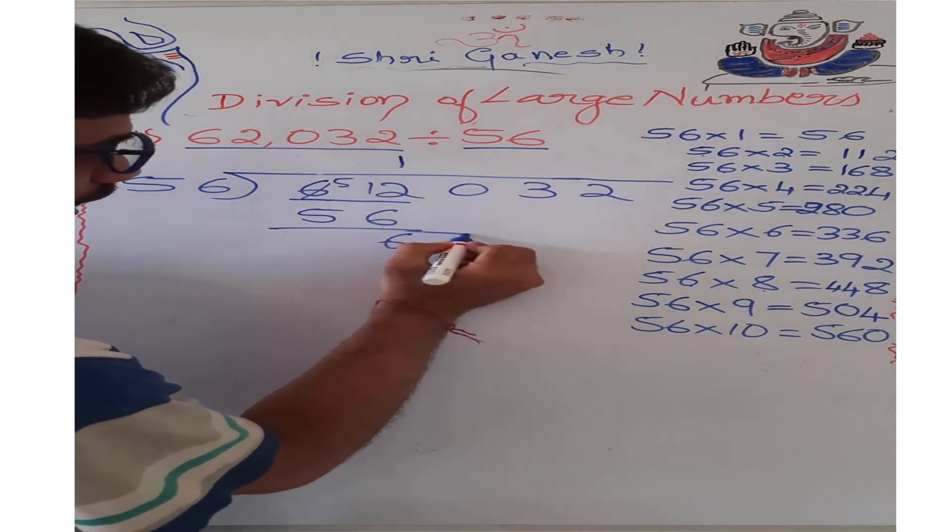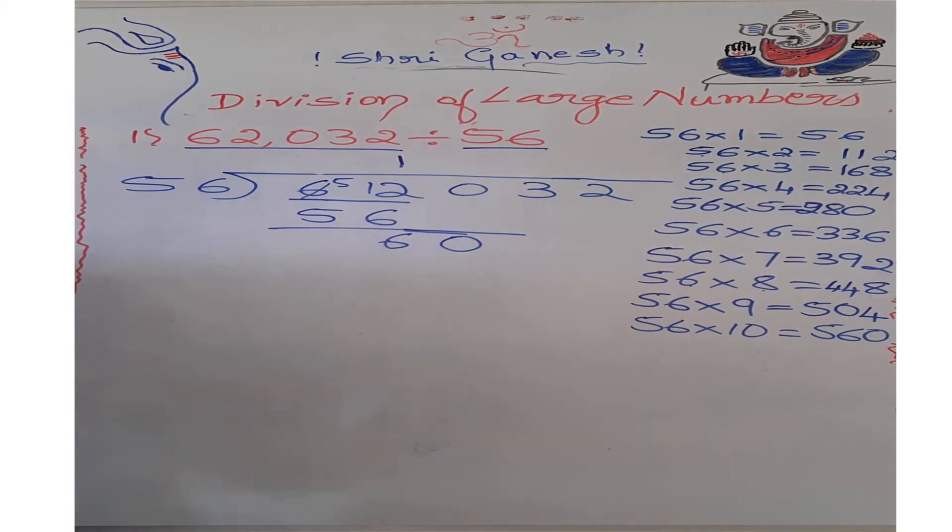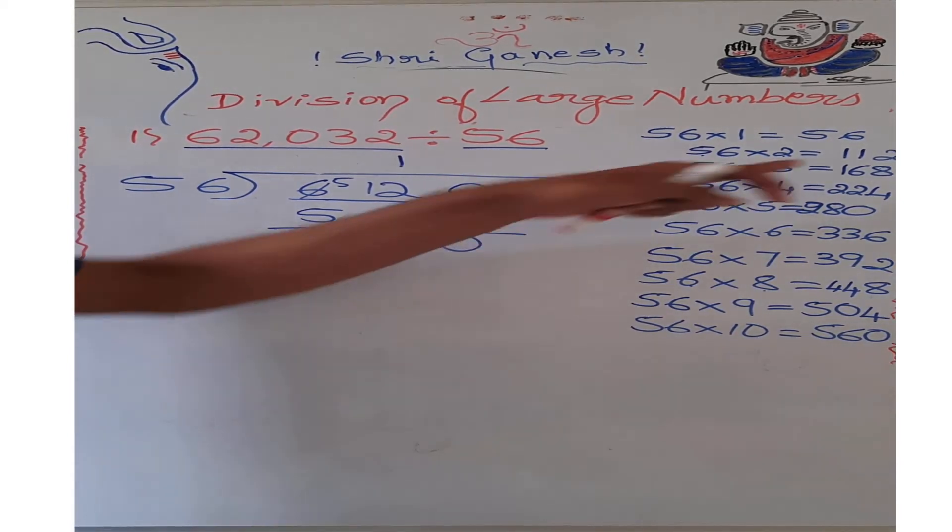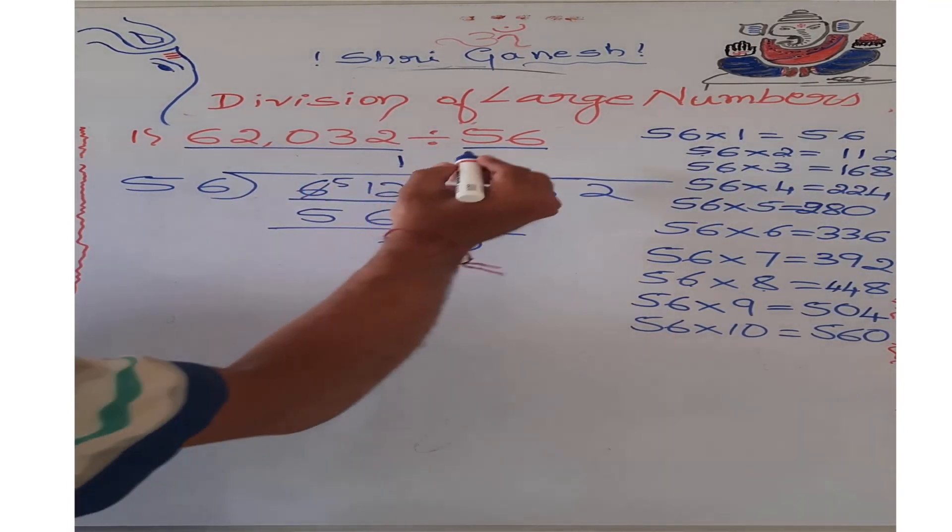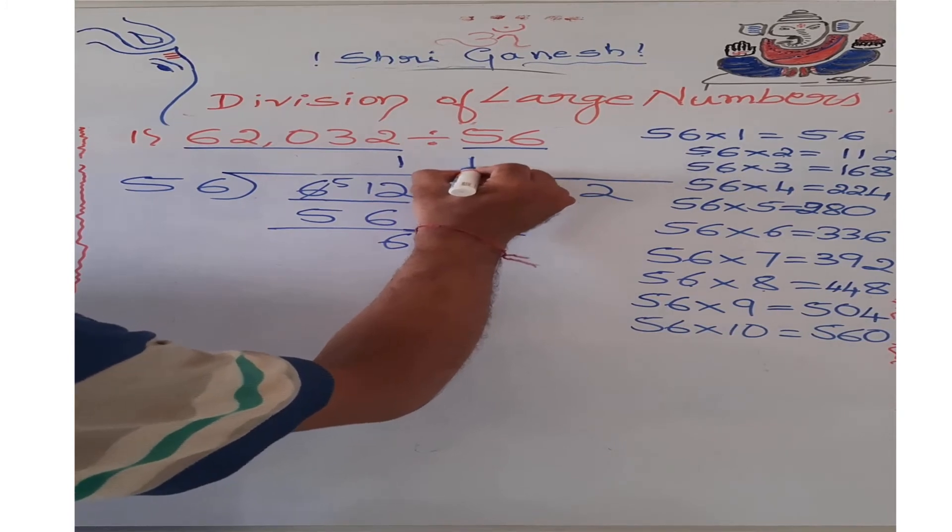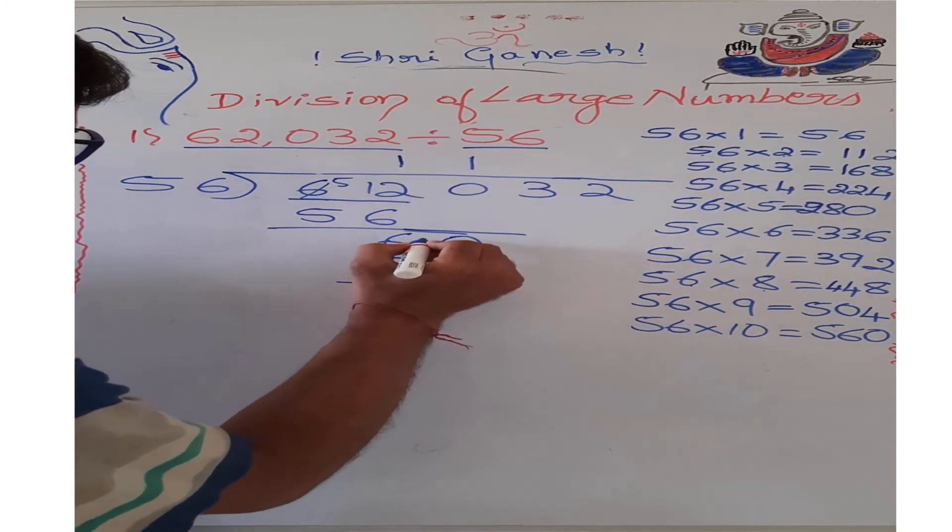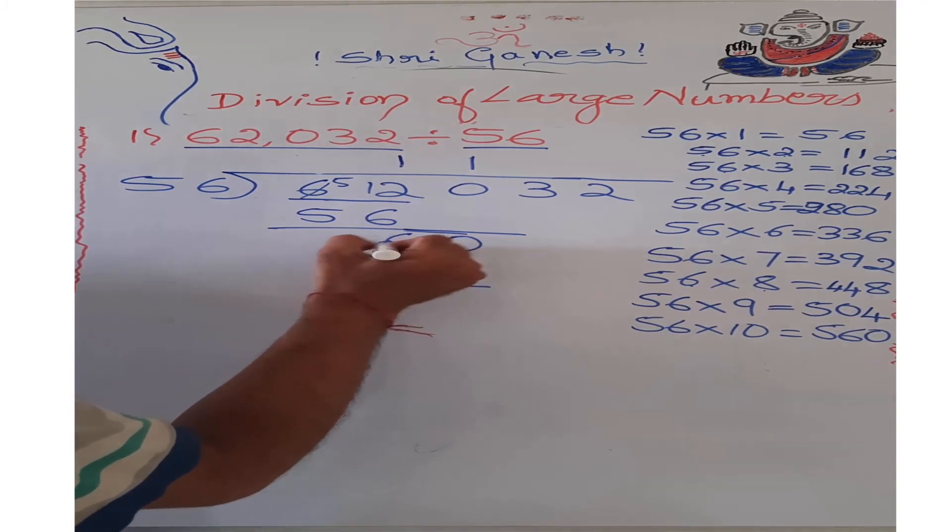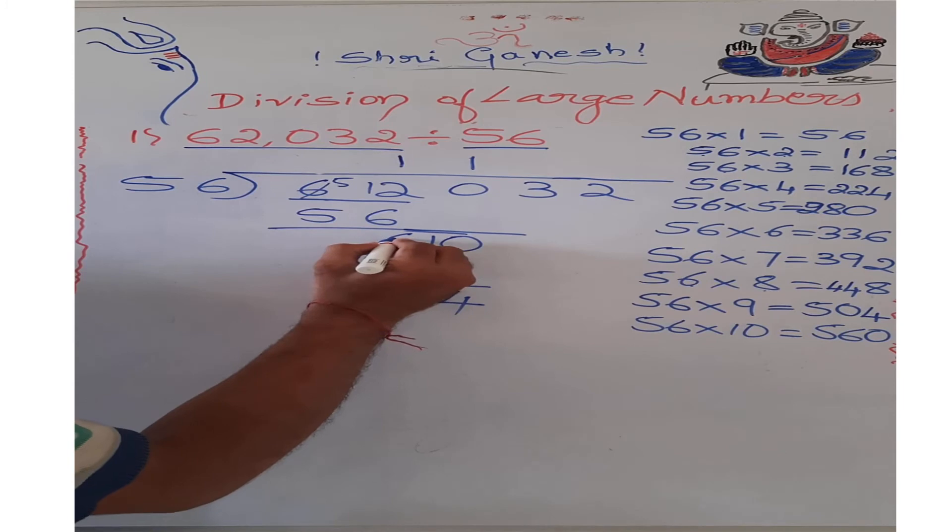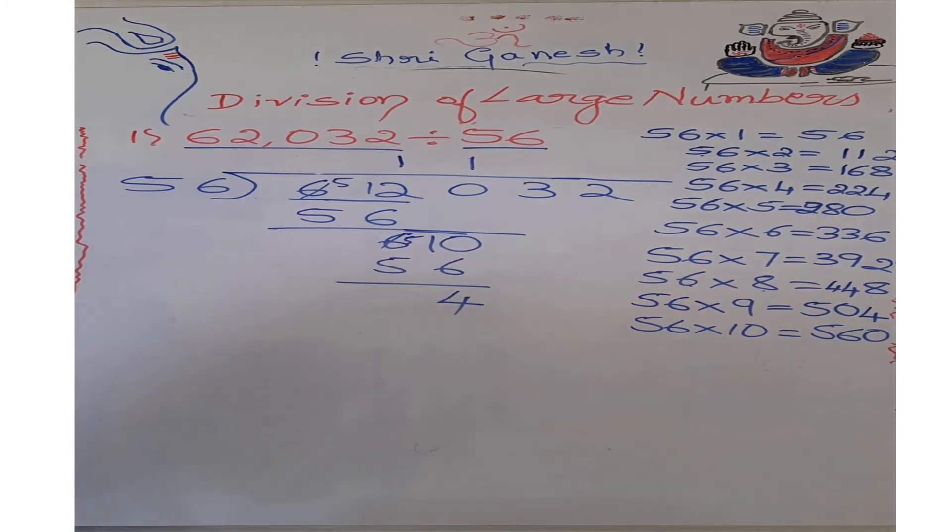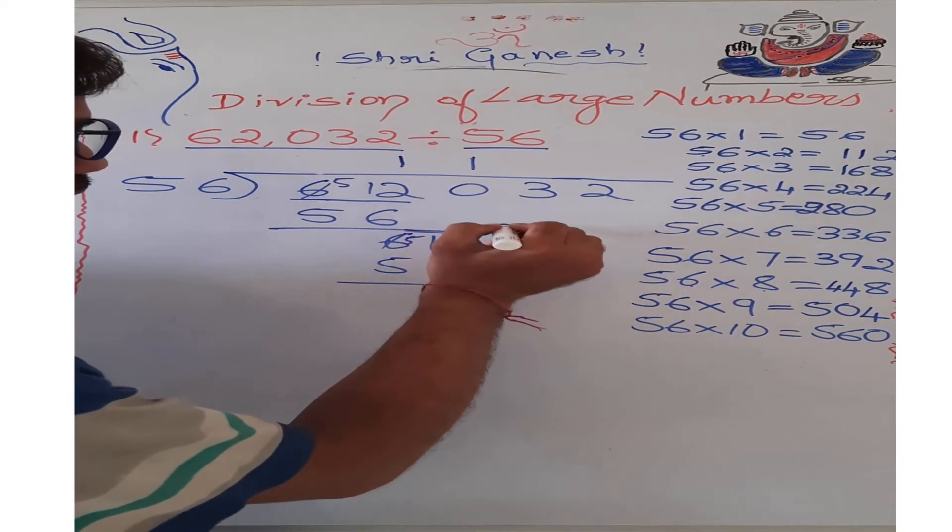Now we need to take the next digit, that is 0. We will take it down. It became 60. Again, the nearest multiple is 56 because 2 times is 112 which is more than this. Therefore I will take again 1, count as 56. If I borrow it became 10, this became 5. 4 I will get as remainder. 5 minus 5 equals 0. So we got 4 as remainder.